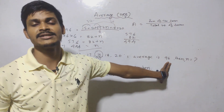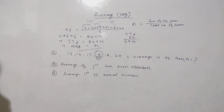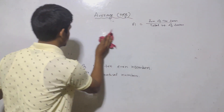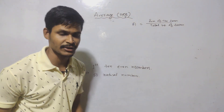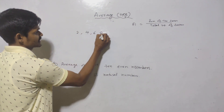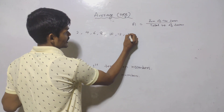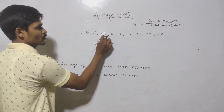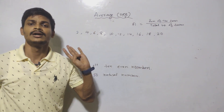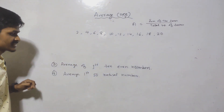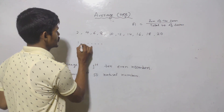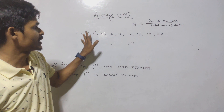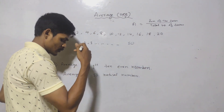The answer is 494. Next: average of first 10 even numbers. For this type of question we have a trick. The first 10 even numbers are 2, 4, 6, 8, 10, 12, 14, 16, 18, 20. We could add them all and divide by 10, but we have a shortcut formula.